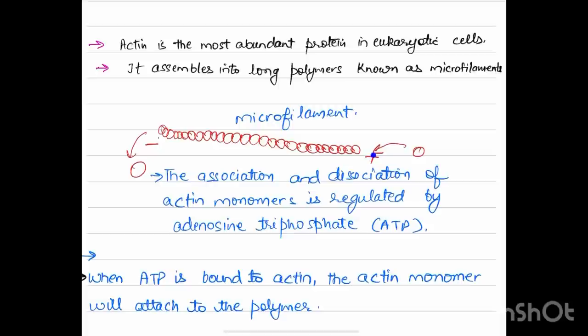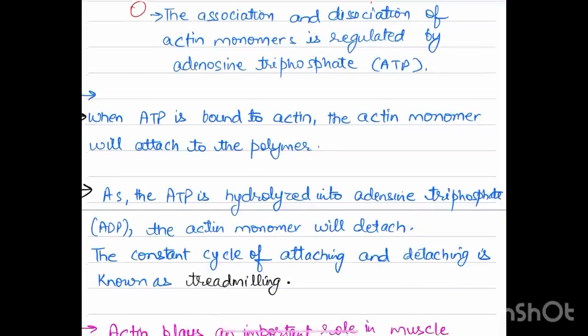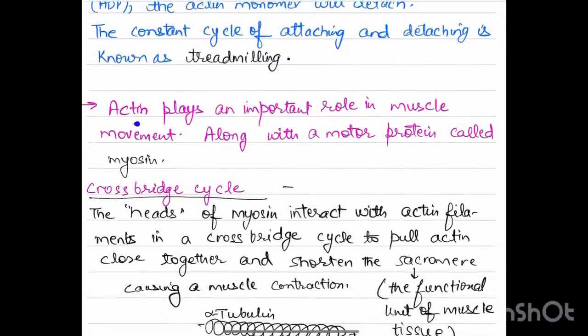The association and dissociation of actin monomers is regulated by adenosine triphosphate, ATP. When ATP is bound to actin, the actin monomer will attach to the polymer. As the ATP is hydrolyzed into ADP, the actin monomer will detach. The constant cycle of attaching and detaching is known as treadmilling.